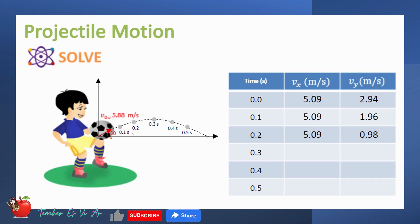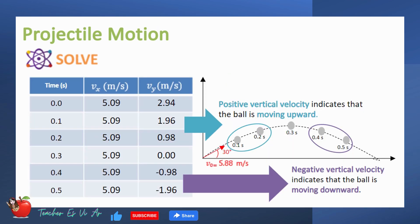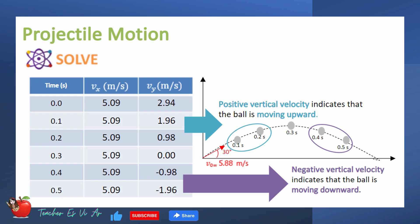Now it is time for you to try. Compute the horizontal and vertical velocities for each given time. Did you get the same answer? Good. We can see that the horizontal velocity is constant all throughout while the vertical velocity changes in speed and in direction. The change in direction is indicated by the sign — a positive sign indicates that the ball is moving upward while a negative sign indicates that the ball is moving downward.